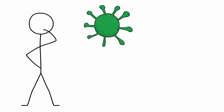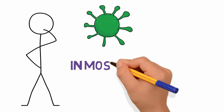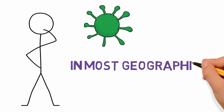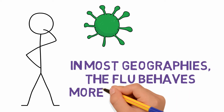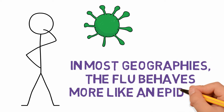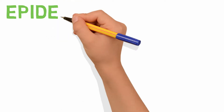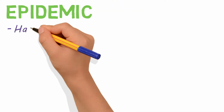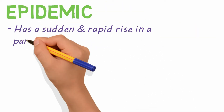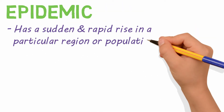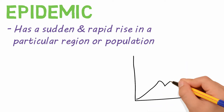You might think something like the flu is an endemic virus, but in most geographies it behaves more like our next classification: epidemics. An epidemic health issue is one that has a sudden and rapid rise in a particular region or population.